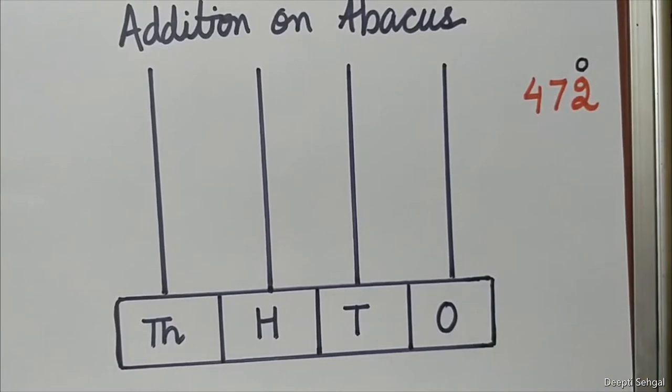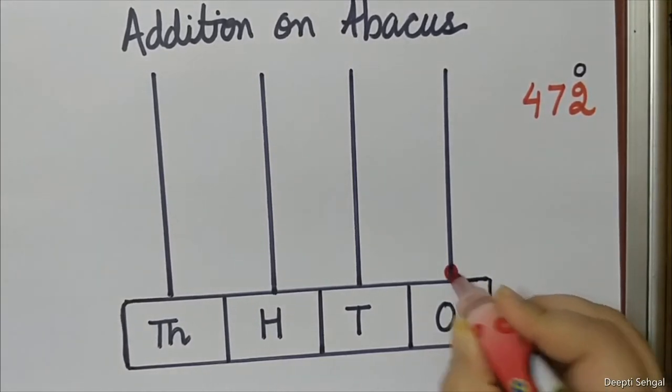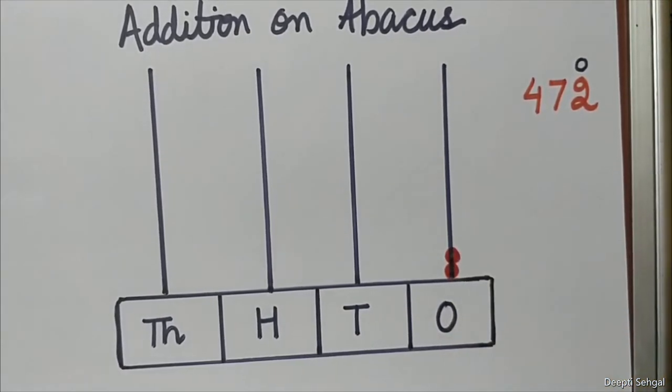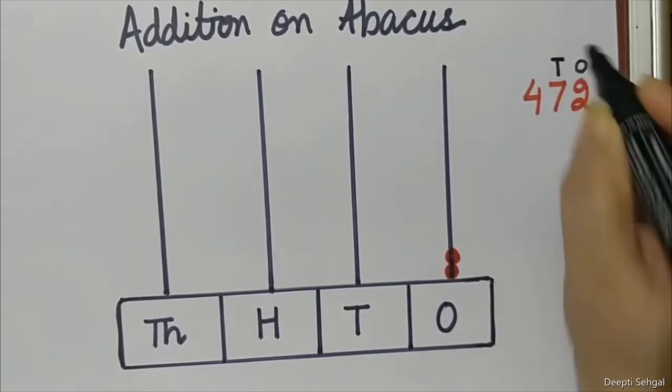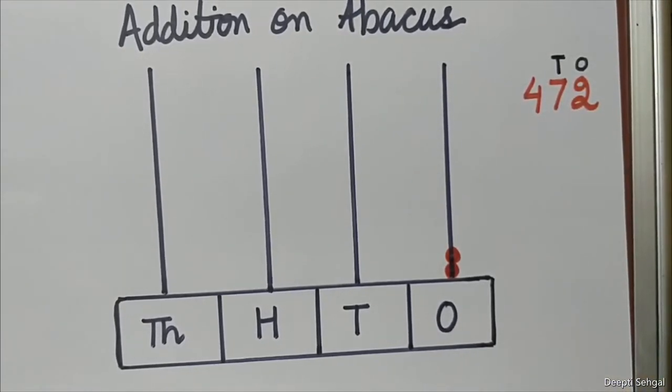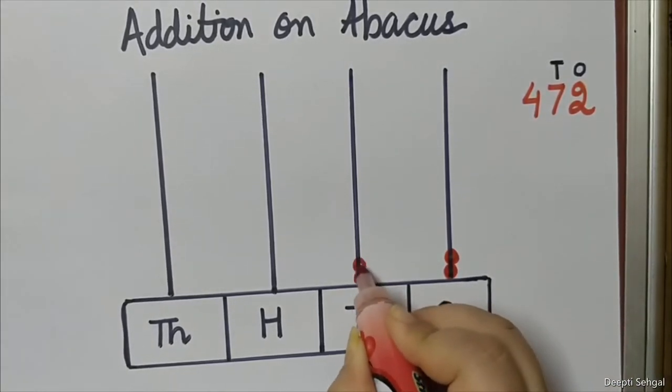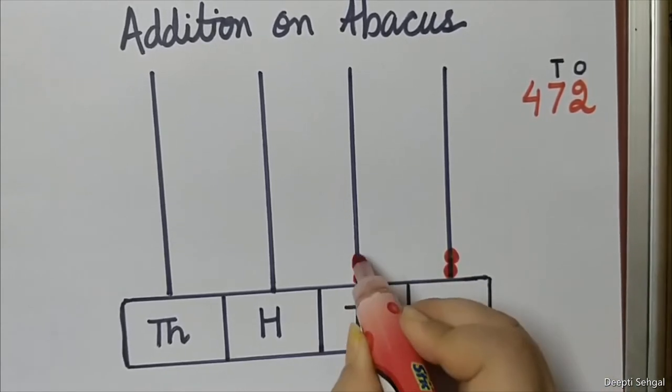Remember, the beads are of same size. Now 7 is at tens place, so I will draw 7 beads: 1, 2 - see, both are coming at same height - then 3, 4, 5, 6, 7.